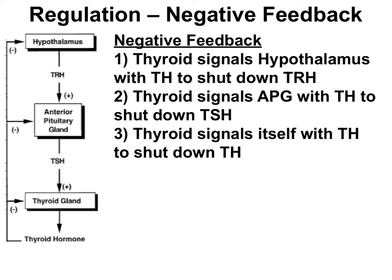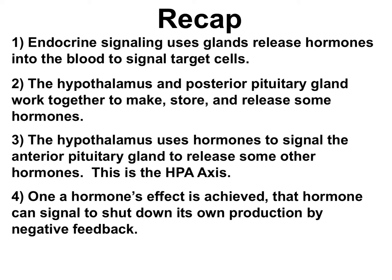Let's recap. Endocrine signaling uses the basics of all signaling pathways: signaling cells in the endocrine glands make hormone ligands that travel through the bloodstream to their target cells and cause a response. A hub of endocrine signaling is the interaction between the hypothalamus and pituitary gland. The hypothalamus and posterior pituitary share a set of neurons that make, store, and secrete two hormones called ADH and oxytocin. A separate set of hypothalamus neurons uses hormones to communicate with the anterior pituitary gland, stimulating it to secrete other hormones that target even more endocrine glands. Together, this communication between the hypothalamus, anterior pituitary, and other glands is called the HPA axis. Finally, hormones use negative feedback to stop their own production once the goal of the hormone is reached.